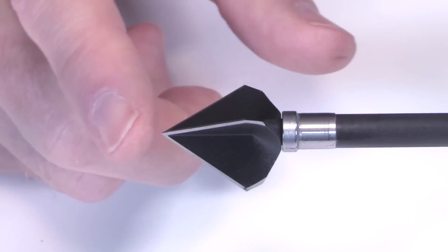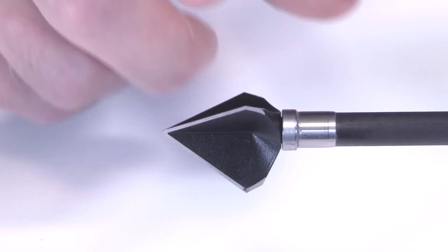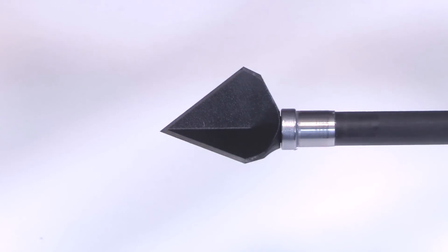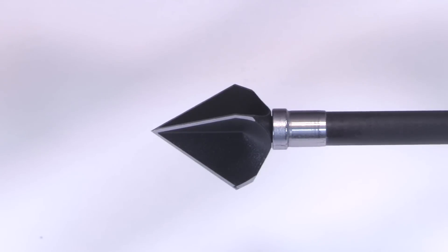And you notice that it's a double bevel sharpened all the way around as well as on these back edges to aid in pulling it out of a target. Or if it's backing out of an animal, it's going to cut tissue as it does it.